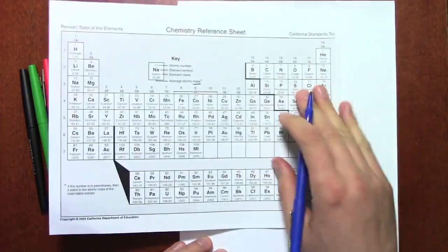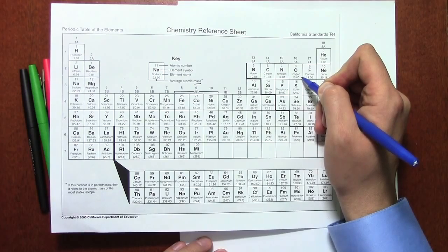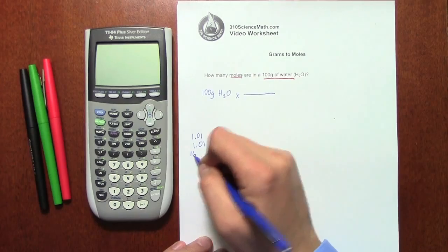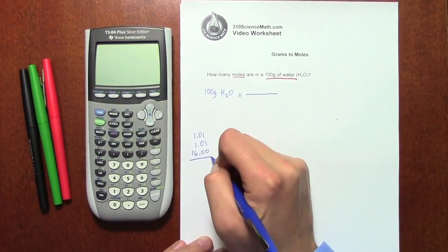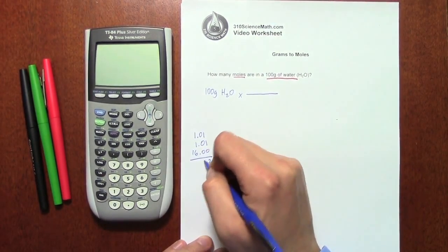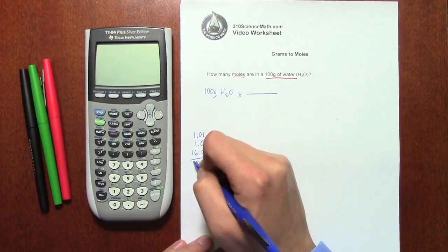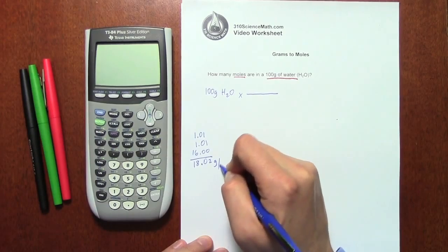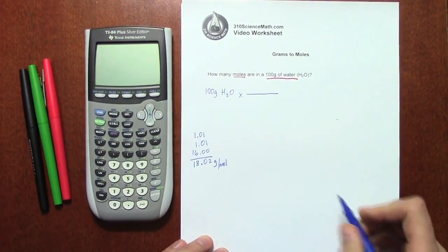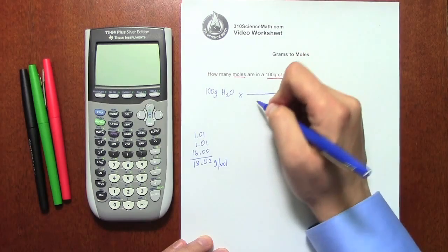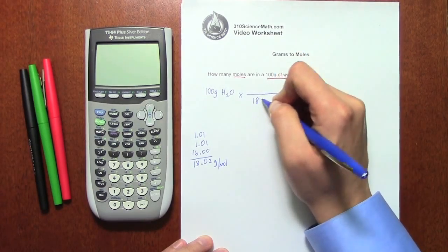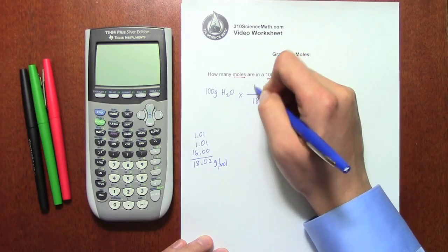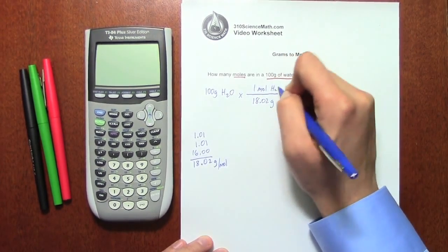Now, oxygen is way on the other side of the periodic table. It's right here. It has a mass of 16. So I'm going to put 16 here and add all those up. So I get 2, 0, and then 8, and then 1. So this tells me that I've got 18.02 grams per mole, and that is the formula mass of water.